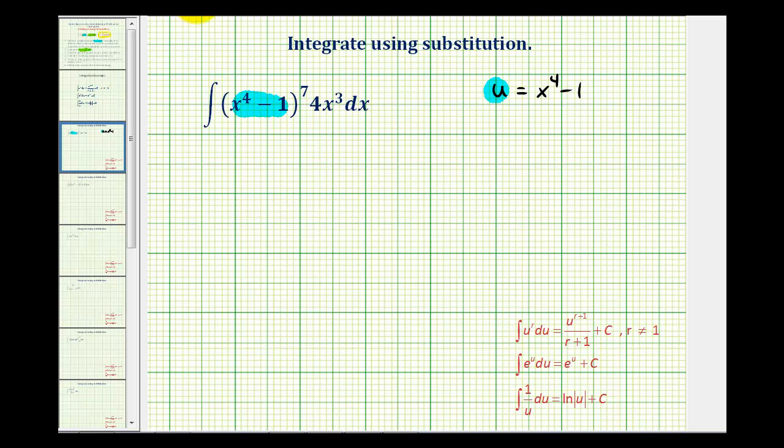So we're letting x to the fourth minus one equal u, and now we'll determine differential u, which will be four x to the third times dx. And notice that four x cubed dx is also a part of the integral, so we can replace this with du.